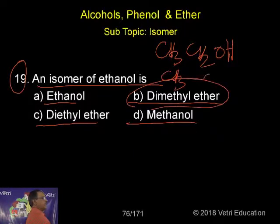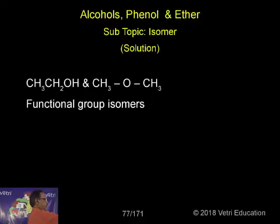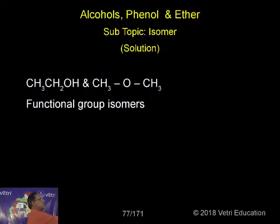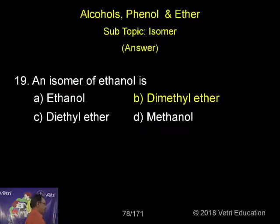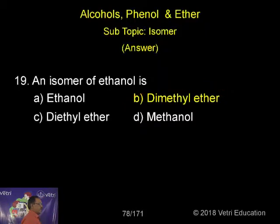This is a functional group isomer. The correct answer is dimethyl ether, which is a functional group isomer of ethanol. The IUPAC name for dimethyl ether is methoxymethane.